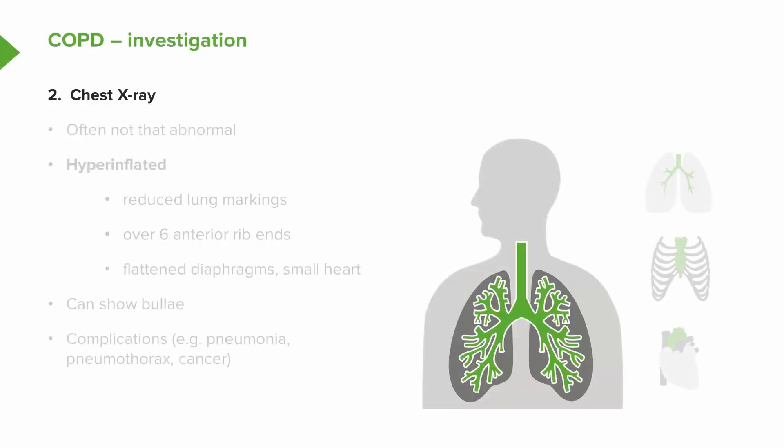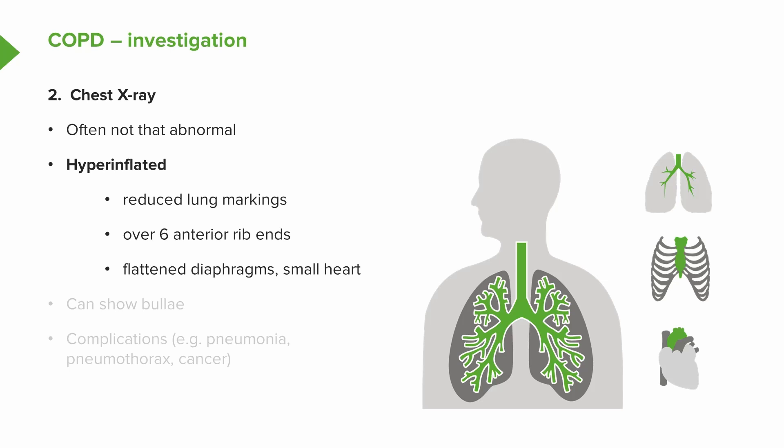The other investigations you need to do with somebody with COPD — a chest X-ray is useful, but it's not that abnormal in most patients. In patients with significant disease, it will show hyperinflation, reduced lung markings, more visible anterior rib ends than normal, perhaps flattened diaphragms, and a small heart. You can see bullae on a chest X-ray — some people have quite expanded lung cysts due to COPD. A chest X-ray is also important to identify complications such as pneumonia, pneumothorax, and chronically to make sure they don't have cancer.